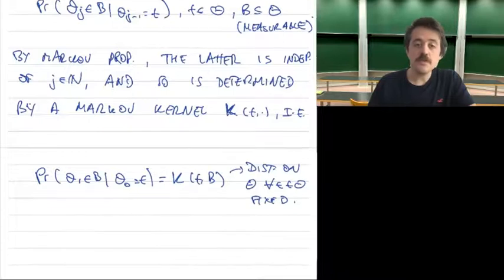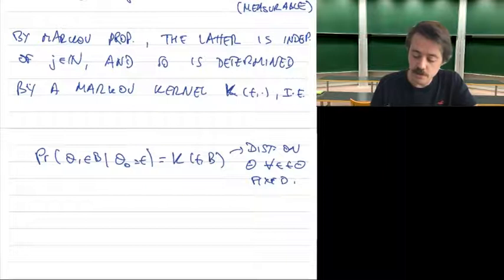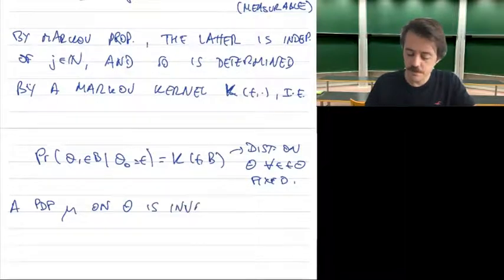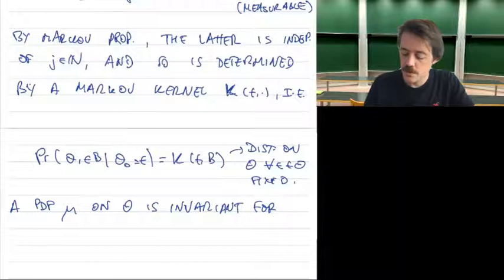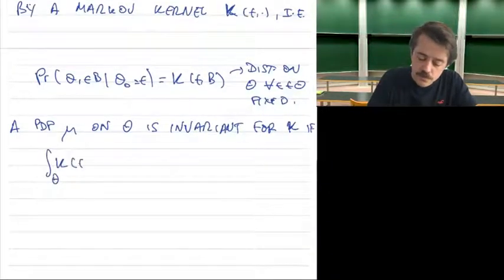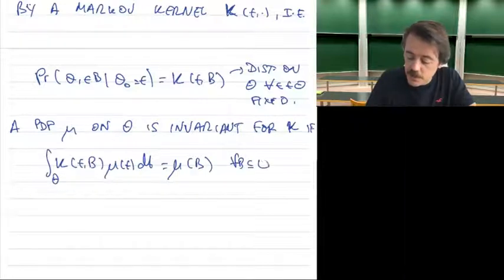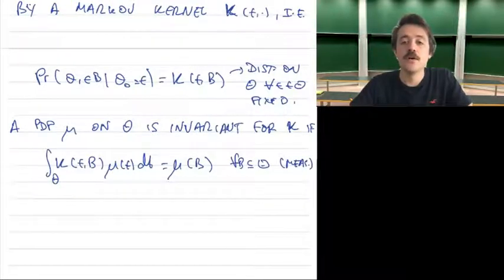A PDF μ on the parameter space is said to be invariant for the kernel or chain if the integral of K(T, B) μ(T) dT equals μ(B) for all measurable B in the parameter space.